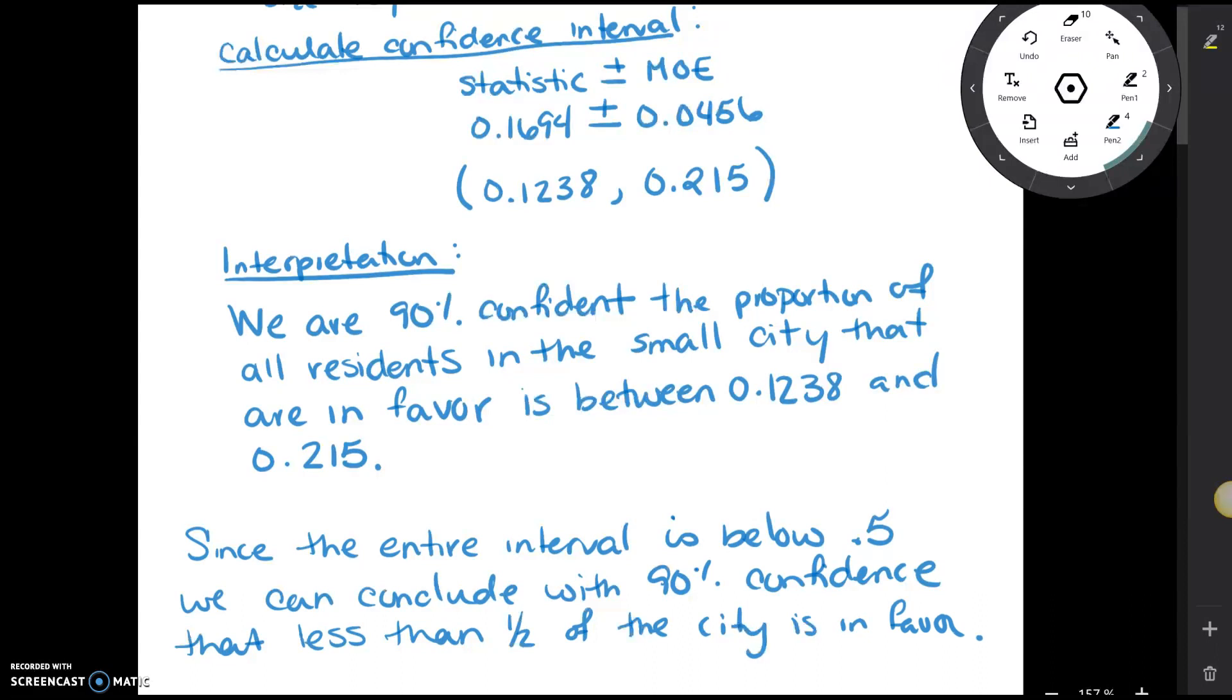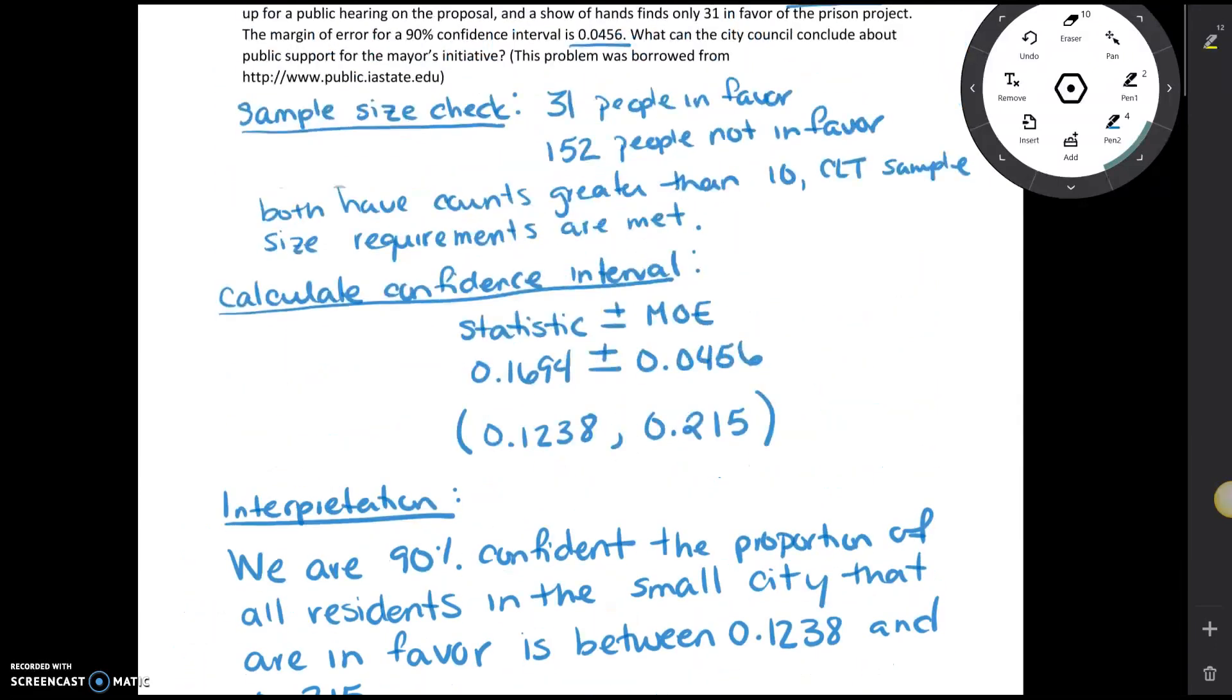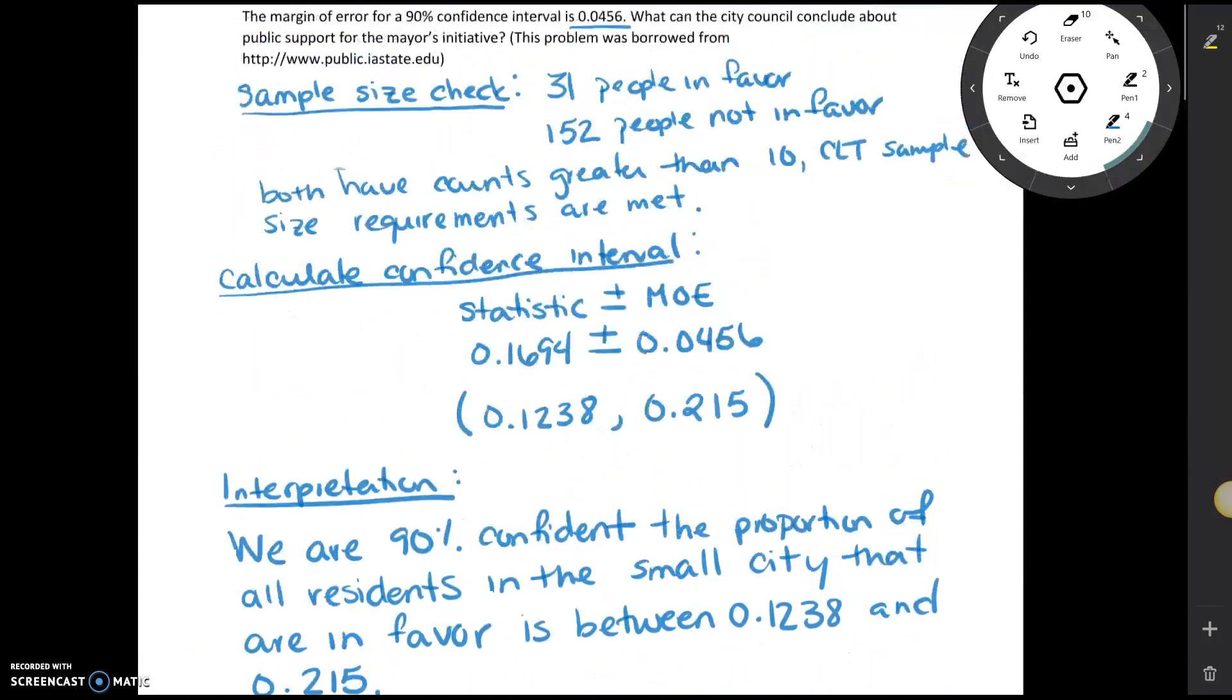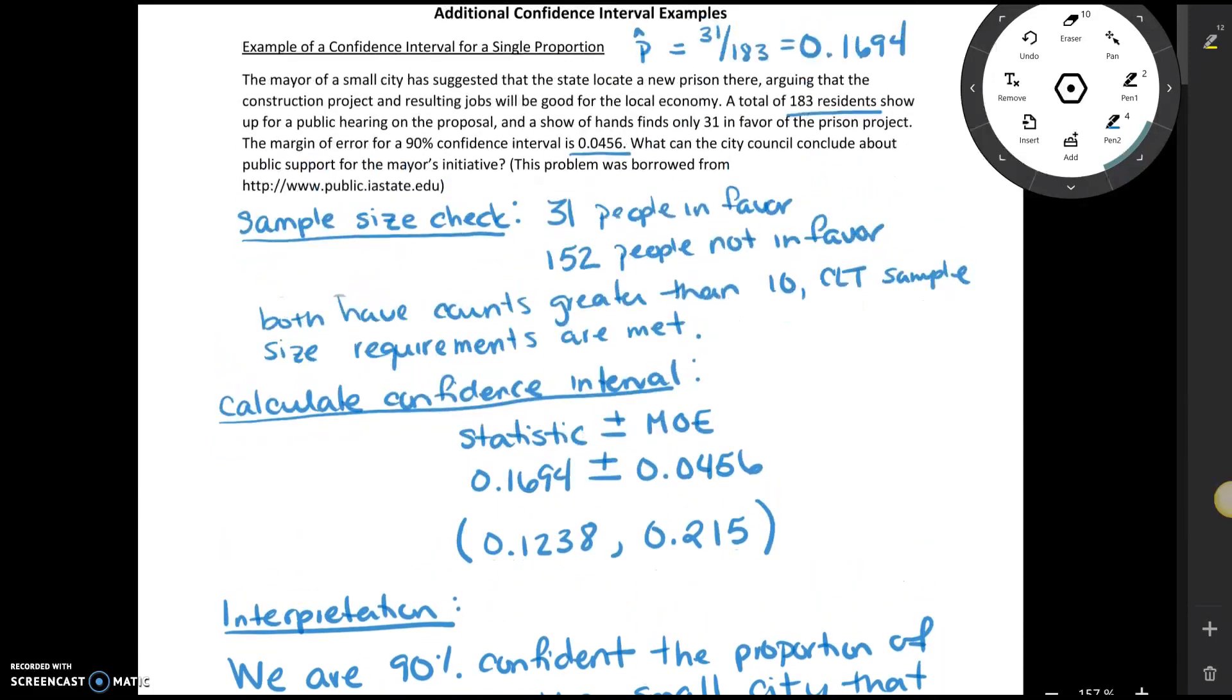For each of the problems that you do on the worksheet, the workflow is going to be very similar. You're going to check your sample size, you're going to calculate your confidence interval, and you're going to give your interpretation. The main thing that's going to change is what type of statistic or parameter you're working with. So this example looked at a single proportion, and in the other examples on this worksheet we're going to look at a single mean, a difference in proportions, and a difference in means.